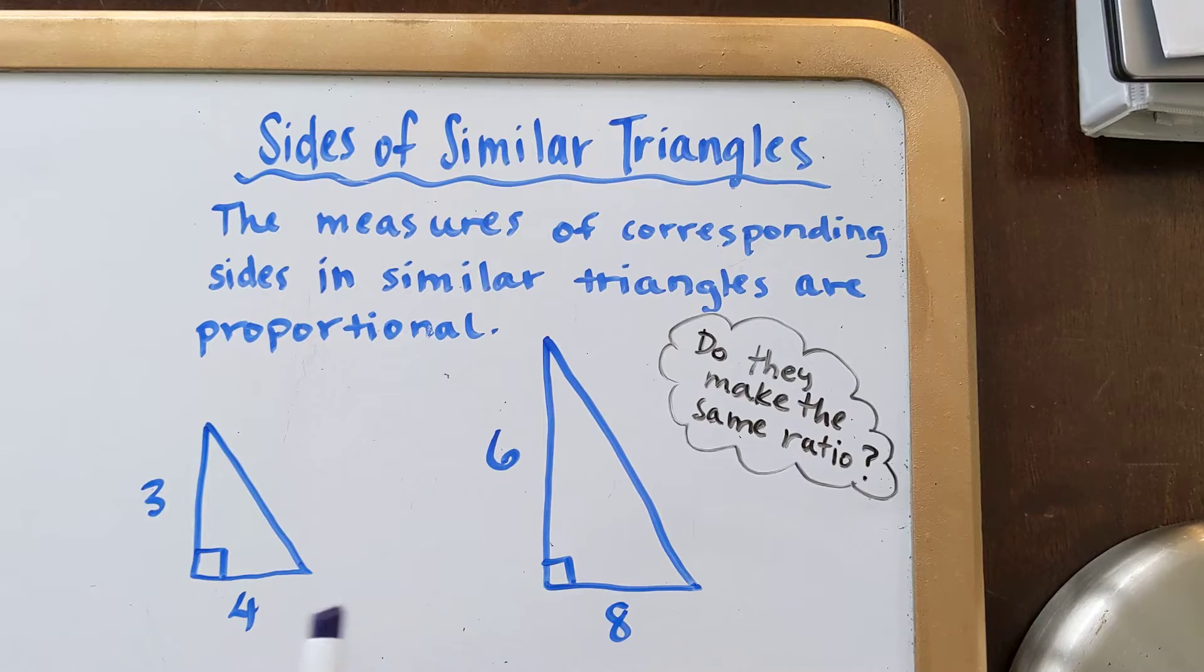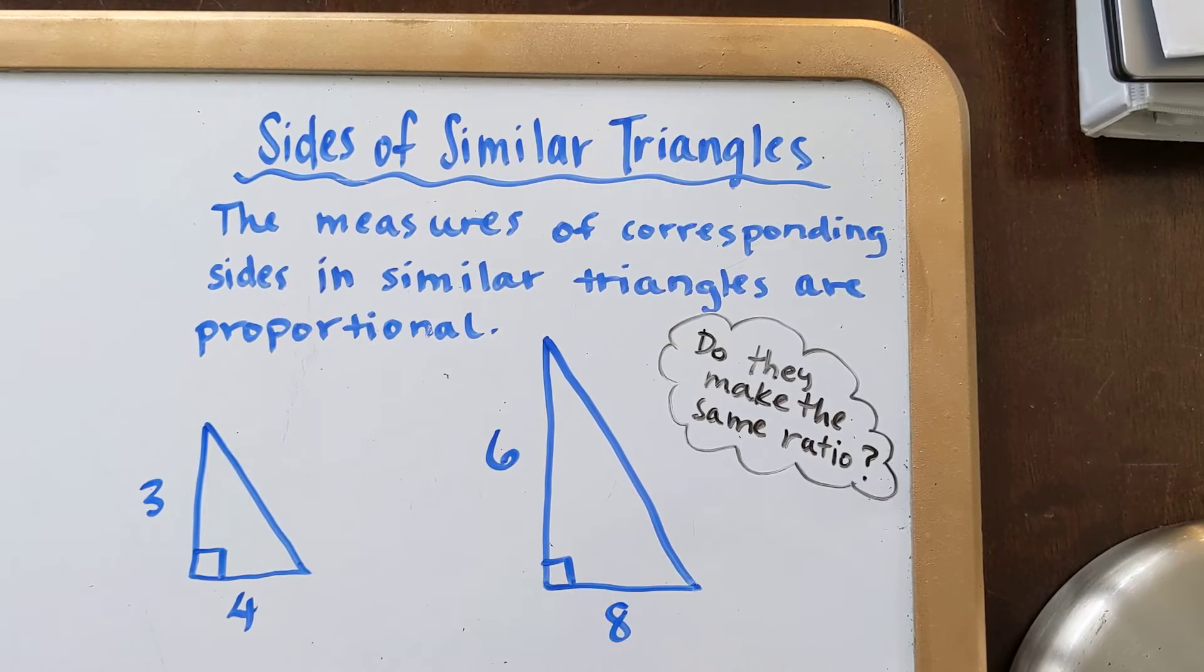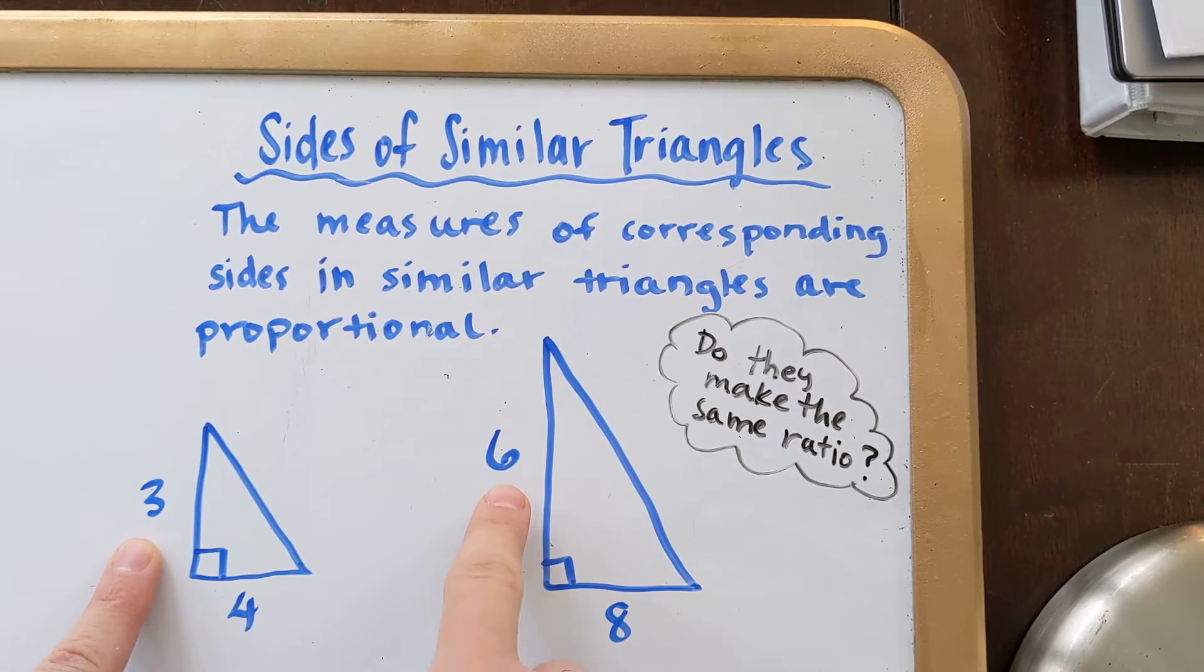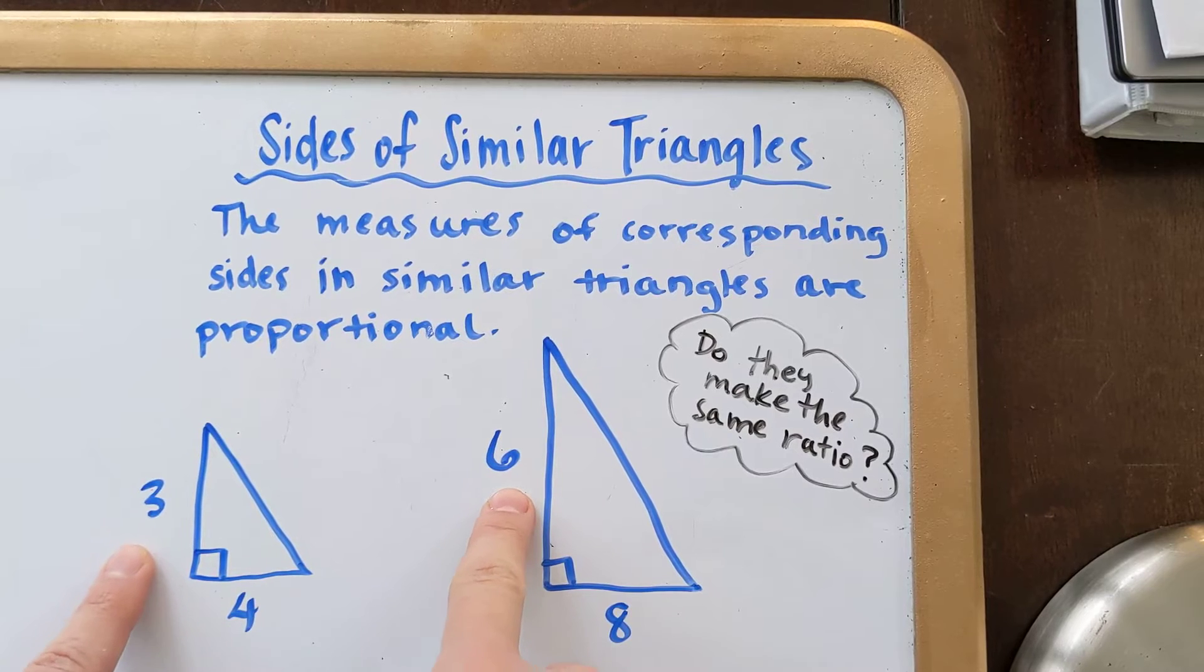So as I'm looking at these two triangles and I'm wondering if they're similar, I need to know what my corresponding sides are. Corresponding sides just means that they're in the same position on their triangles. So I'm looking at this 90 degree angle here, to its left I have a 3 on this triangle, to its right I have a 6. Those would be corresponding.